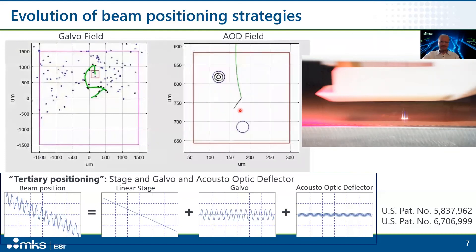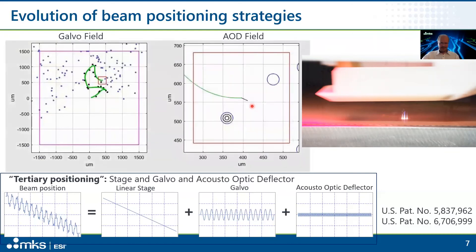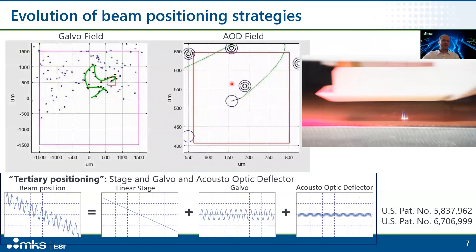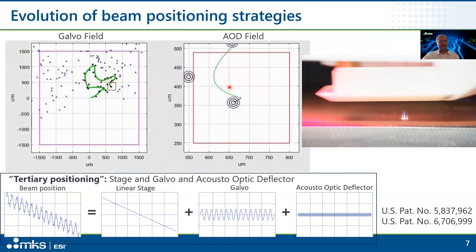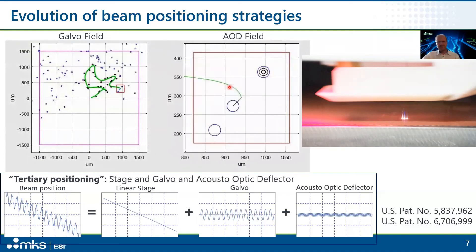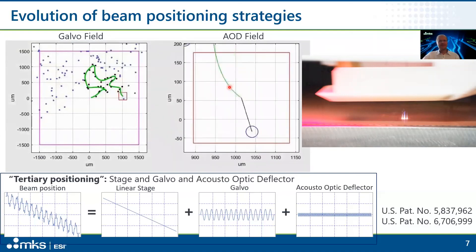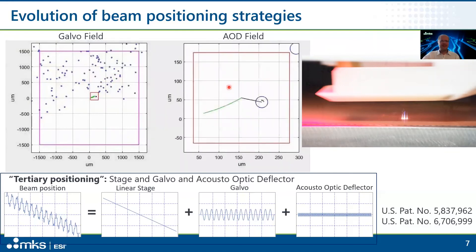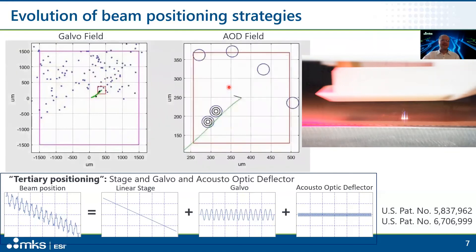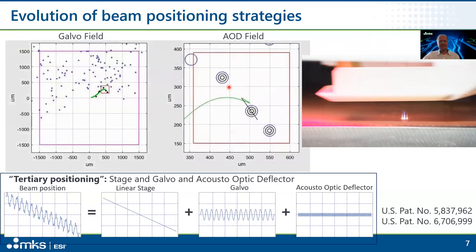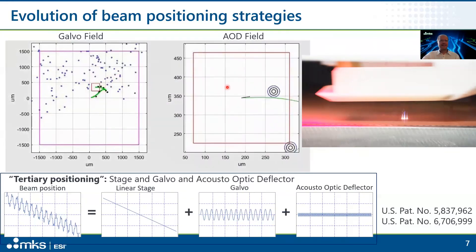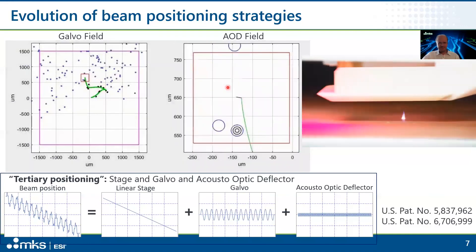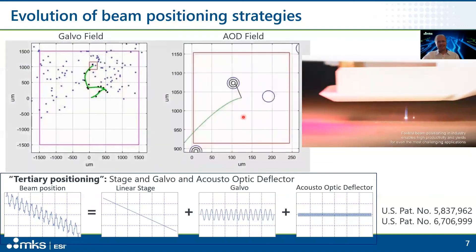The acousto-optic deflectors provide the last few tens of microns of connection to the actual via location and any micro-motion necessary to carve out the via. This enables the use of higher power lasers because the move time from via to via is much faster and the micro-motion within the via is easily controlled, not limited by any bandwidth limitations of the galvos.